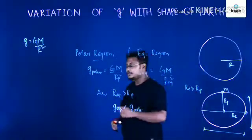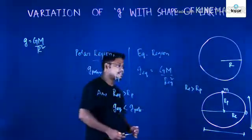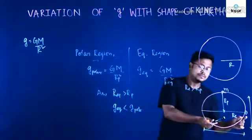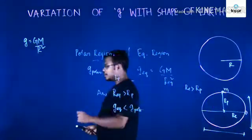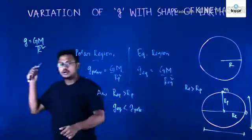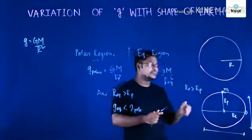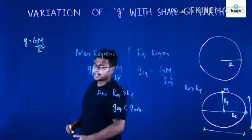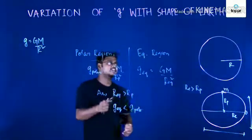So if you weigh a body, the weight will be minimum in the equatorial plane. If you take the same body to the pole, the weight will be much higher in the polar region. This is how the acceleration due to gravity varies with the shape of the earth.